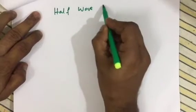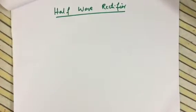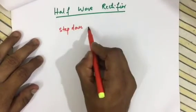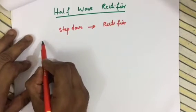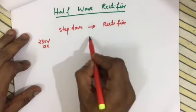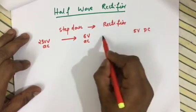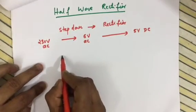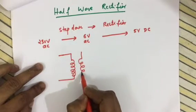In the half wave rectifier, our input voltage is 230 volts AC. We need to step this down first, then go for rectification. The first step is step-down, then rectification. For example, if we need a 5 volt DC final output, we should use a 6 volt step-down transformer first, because after rectification we will get approximately 5 volt DC.